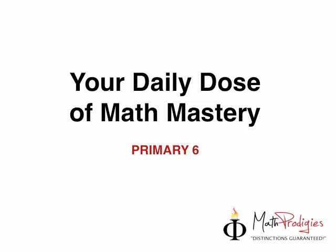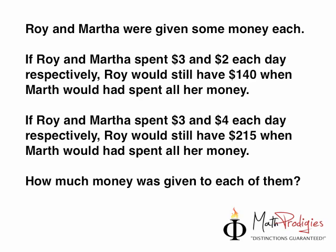Yesterday's question was a little more complicated than usual. Roy and Martha were given some money each — not equal amounts, but some money. If Roy and Martha spent $3 and $2 each day respectively, Roy would still have $140 left when Martha would have spent all her money. If Roy and Martha spent $3 and $4 each day respectively, Roy would still have $215 when Martha would have spent all her money. So how much money was given to each of them?